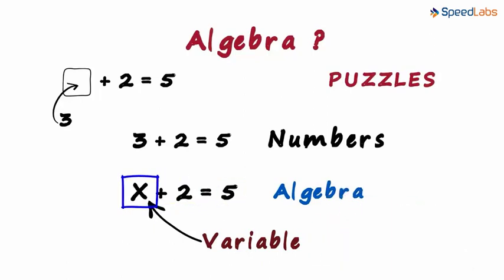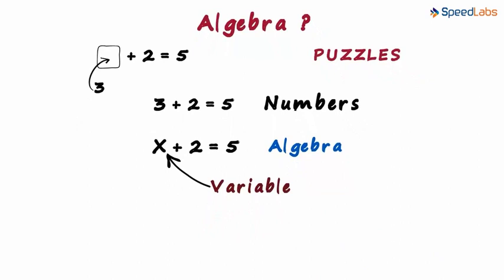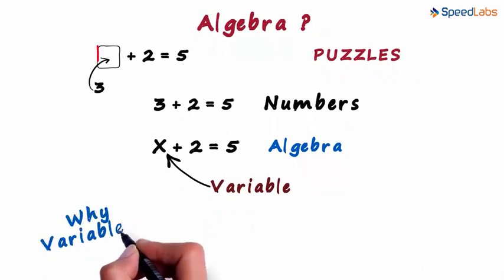It deals with variables and unknowns and we are expected to find their value. But why use variables? Why not boxes like these?